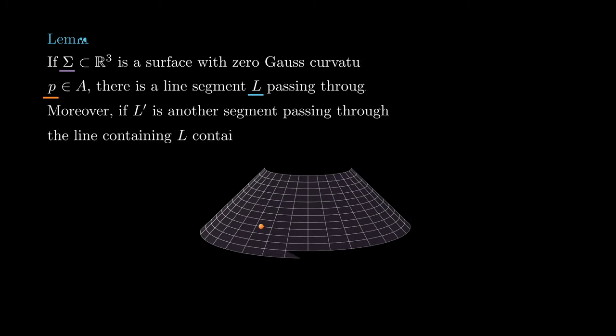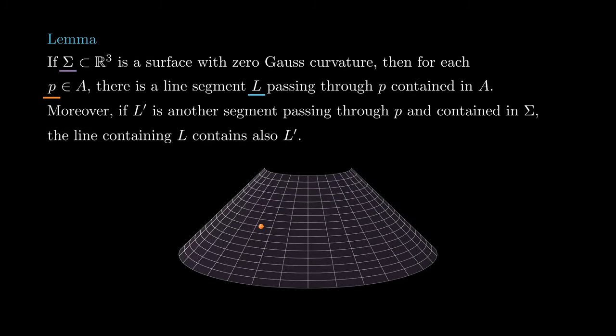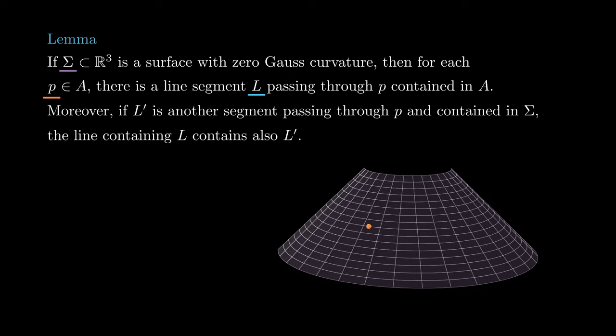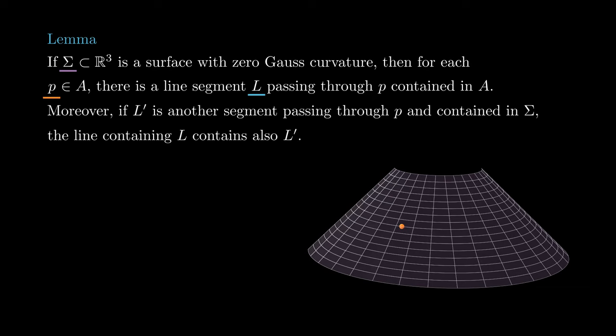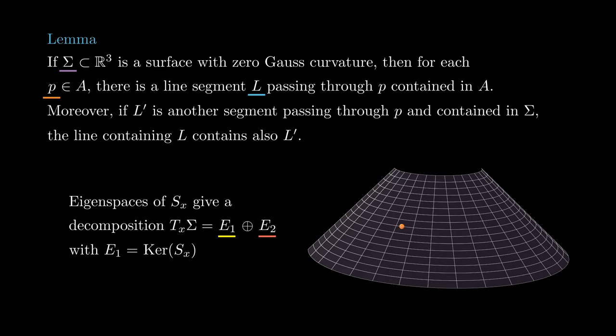The first part of the proof consists of showing that for each P in A, there is a line segment passing through P contained in A, and that this segment is unique in the sense that any other segment with this property will span the same line. For P in A, by continuity there is a neighborhood of P where the shape operator doesn't vanish. Then at each x in that neighborhood, one eigenvalue of S is zero and the other one doesn't vanish.